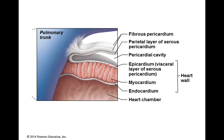Outside of the myocardium is the epicardium. You'll notice that it is continuous with the parietal layer of the serous pericardium, but they are two different names. This layer is called the epicardium, but we also call it the visceral layer of the serous pericardium. The outside is called the parietal layer of the serous pericardium. The word visceral means internal; the word parietal means external.